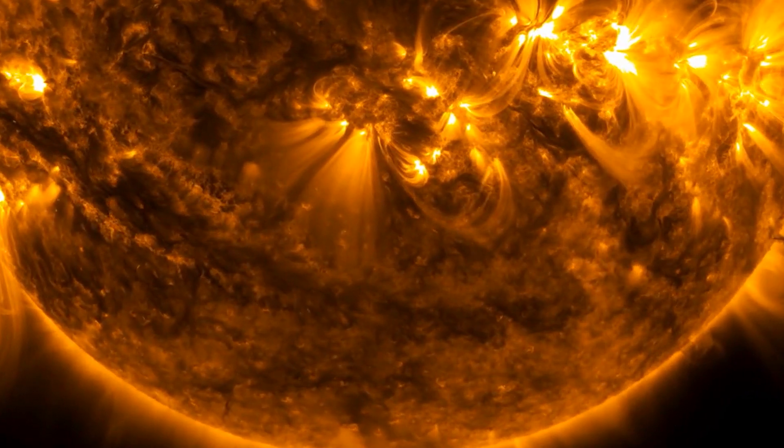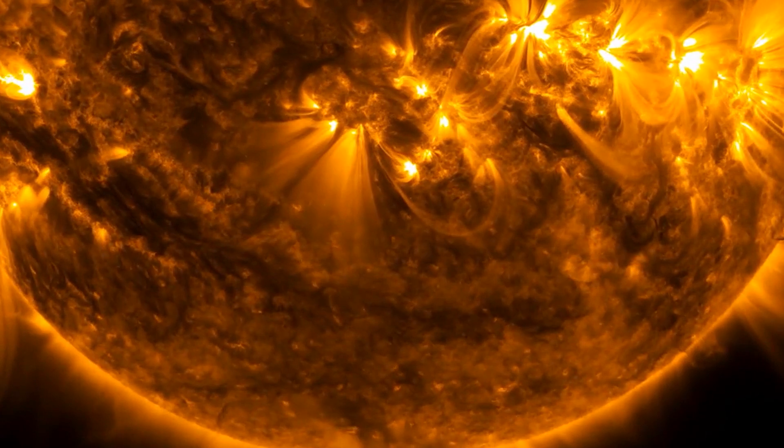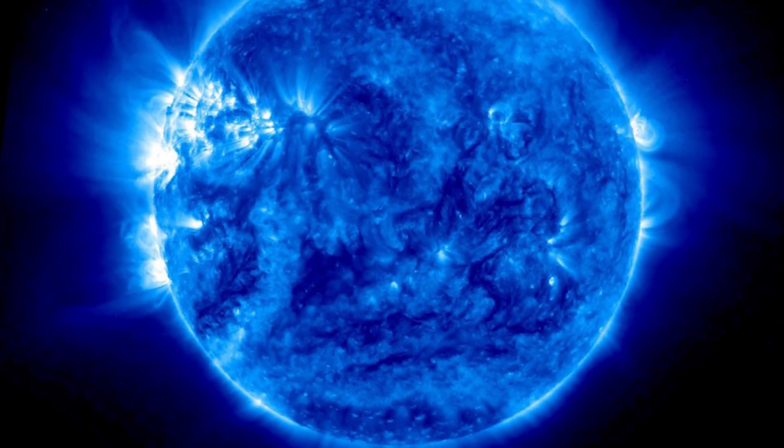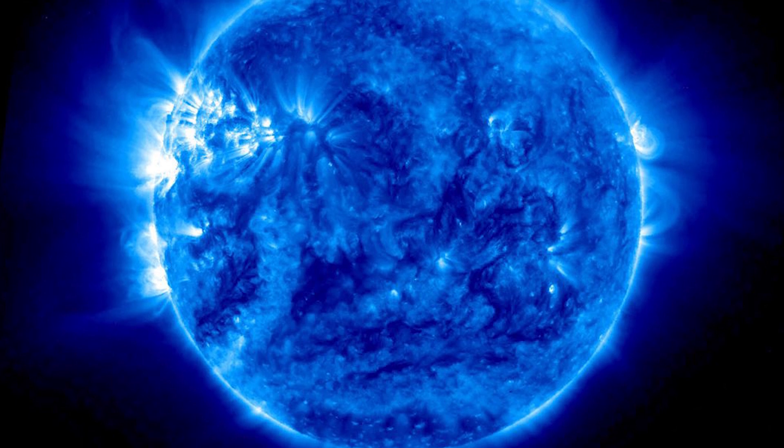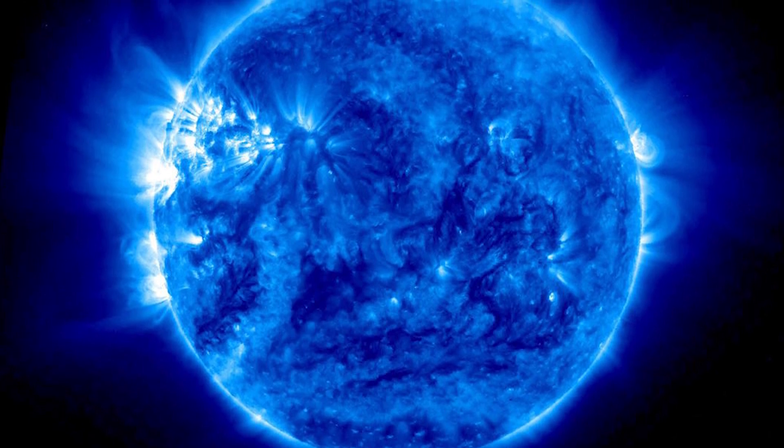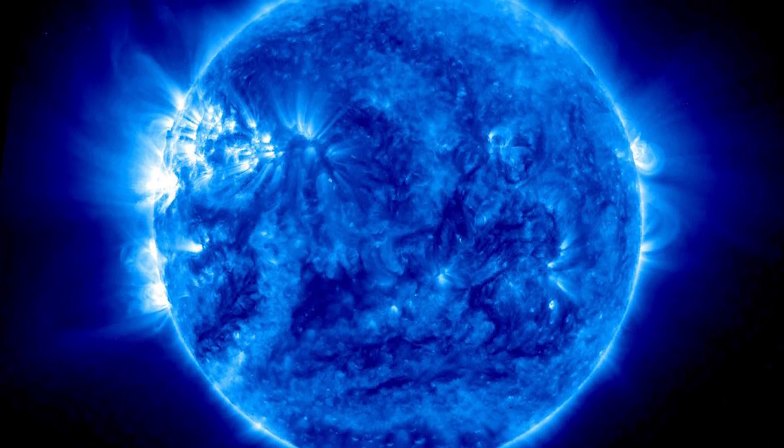This last stage in a red dwarf's life is called blue dwarf, because its color will change as the surface temperature increases. Since red dwarfs live for trillions of years, astronomers estimate there are currently no blue dwarfs in the universe.